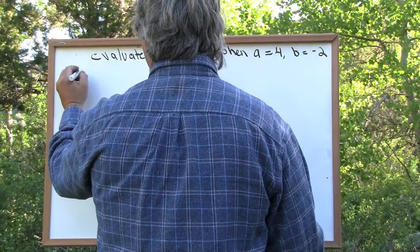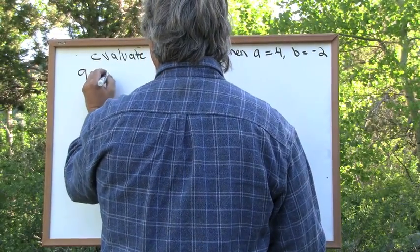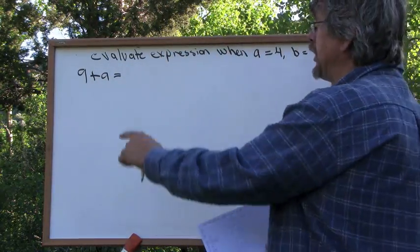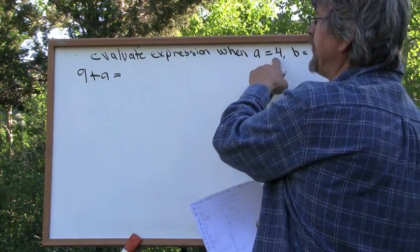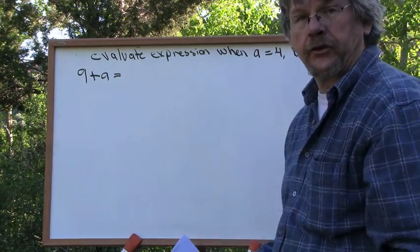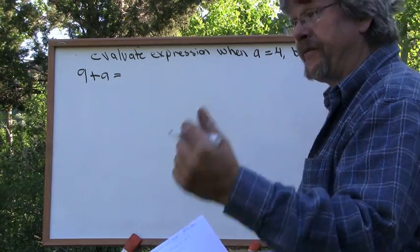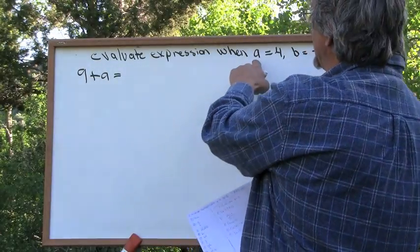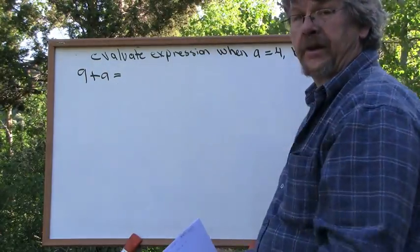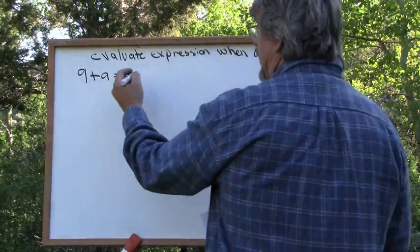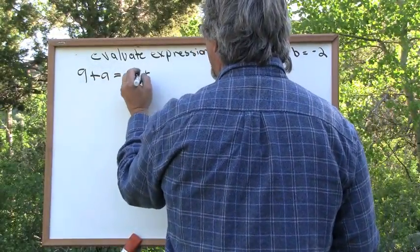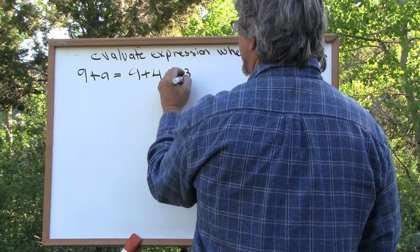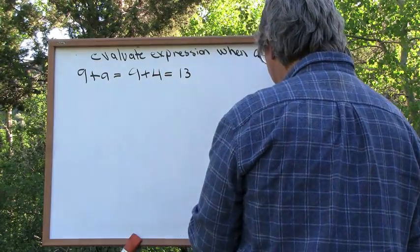Let's suppose we're given the first expression 9 plus A. Piece of cake. What you do is you plug the value of A — we're given the value of the variable. When we're given an expression, we plug this value in and solve. So this is simply 9 plus A, where A is 4, equals 13. Piece of cake.